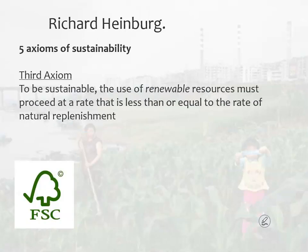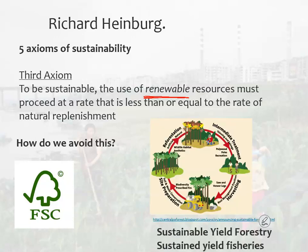The third axiom is something we've seen already: the use of renewable resources must proceed at a rate that is less than or equal to the rate of natural replenishment. The key is that it's renewable resources — something that renews itself. We can't use it any faster than it's replenished. One way to address this is sustained yield — or sustainable yield — resource management in forestry and fisheries. A lot of timber companies recognize that if their income is based on harvesting trees, they need to make those trees last. Pretty common sense.